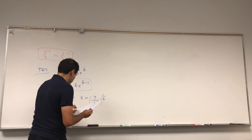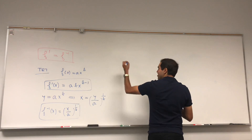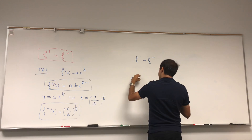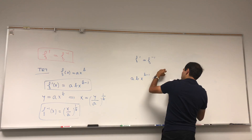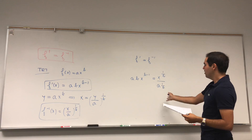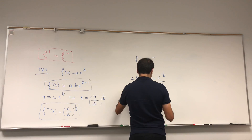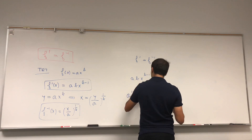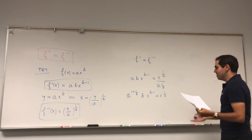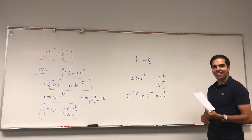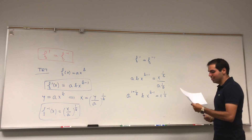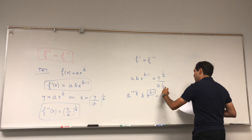If we ask whether the derivative equals the inverse, that means abx^(b-1) = x^(1/b) · a^(1/b). Cross-multiplying gives a^(1 + 1/b) · b · x^(b-1) = x^(1/b). Since both sides are power functions, two power functions are equal if and only if their exponents are equal and their coefficients are equal.